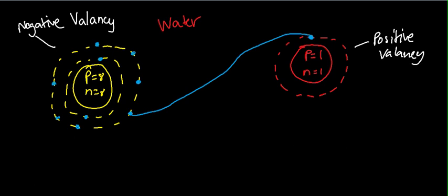But what about oxygen? It still needs one more electron to complete the eight electrons in its outer shell. So, for that, let's take one more atom of hydrogen.